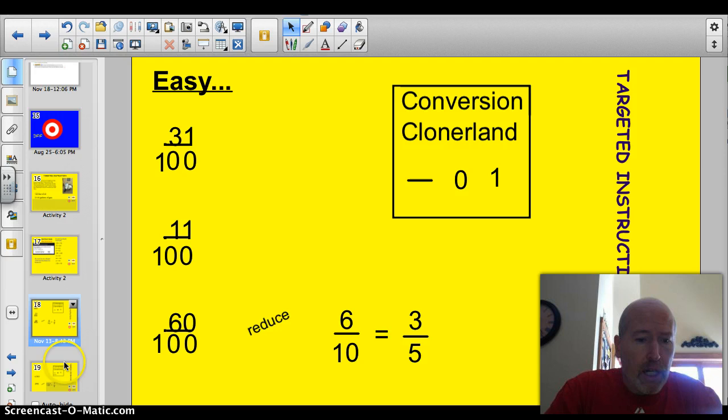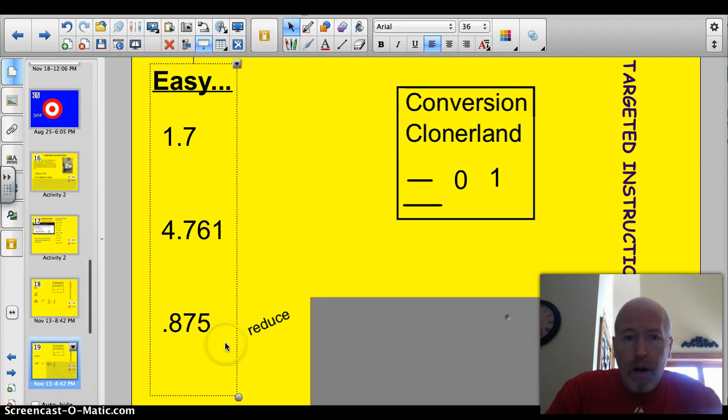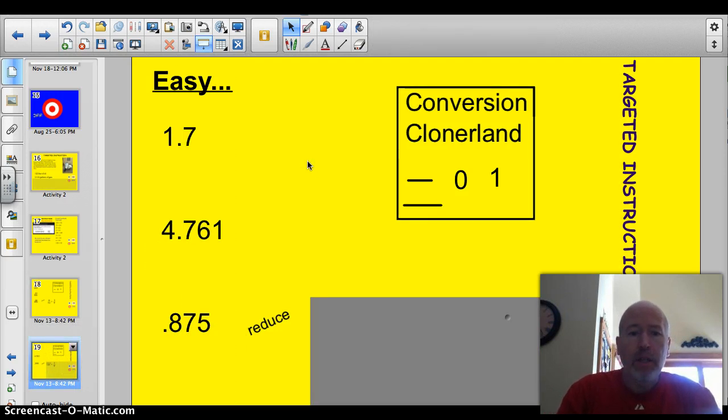Let's take a look at a couple other ones here. I want you to try doing these. I'll do the first one for you. 1.7. This is a little different than the ones I did before. So I'm going to grab my cloner. I'm going to change that dot into a bar. I'm going to put a 0 underneath it. And then I'm going to put a 1 here. And I've got 1 and 7 tenths. The whole number stays the same. Nothing's changing there.